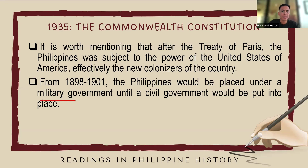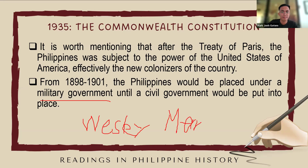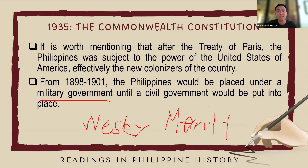This military government was led by General Wesley Merritt. The military government was initially led by General Wesley Merritt and then by subsequent military commanders. During this time, the primary focus of the military government was to establish control over the Philippines and manage the transition from Spanish rule to American administration.